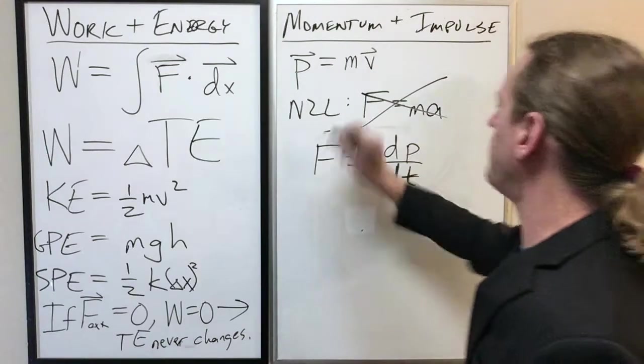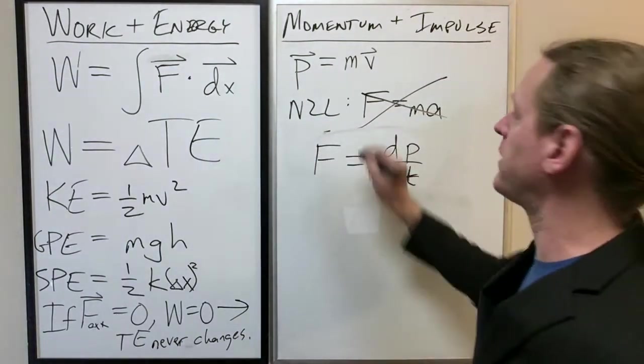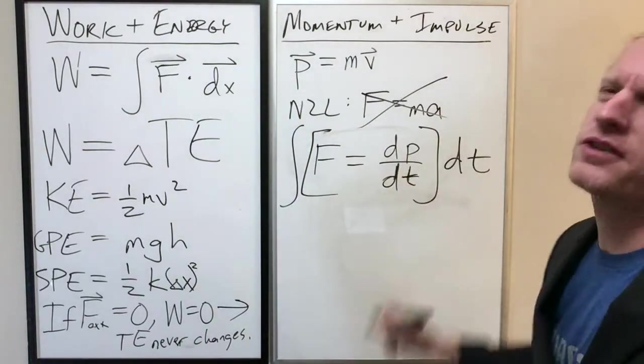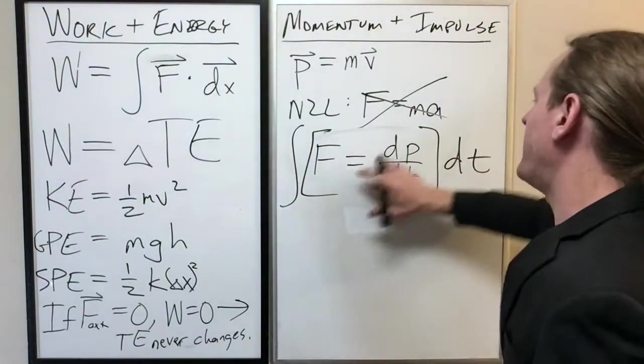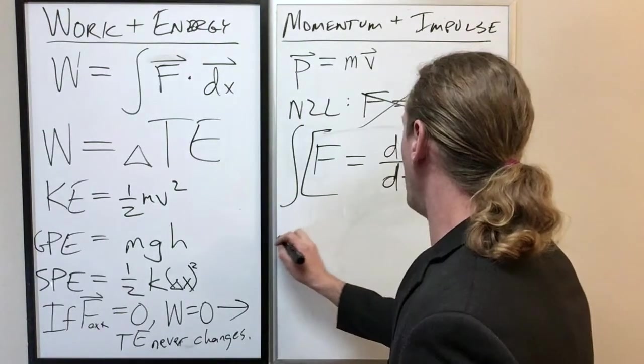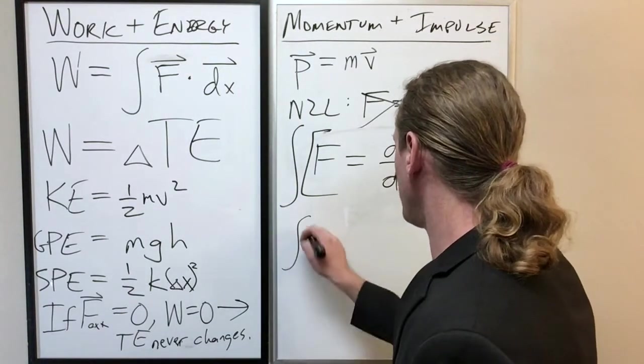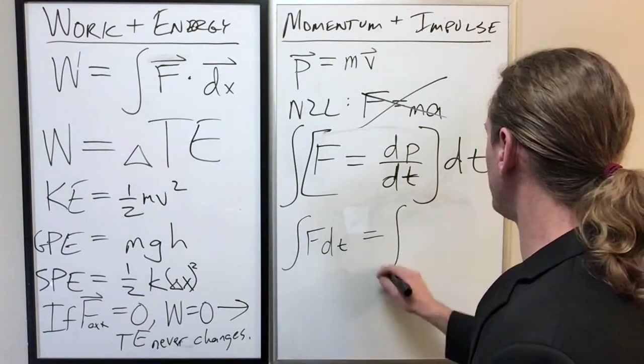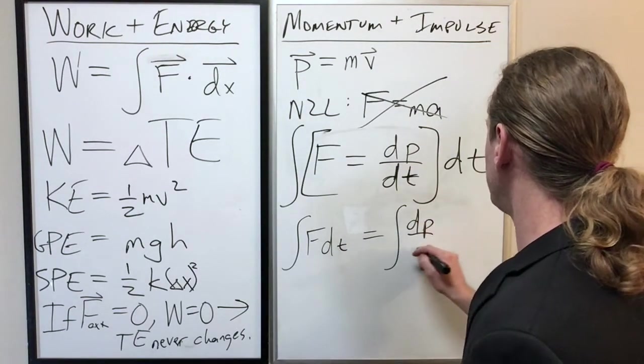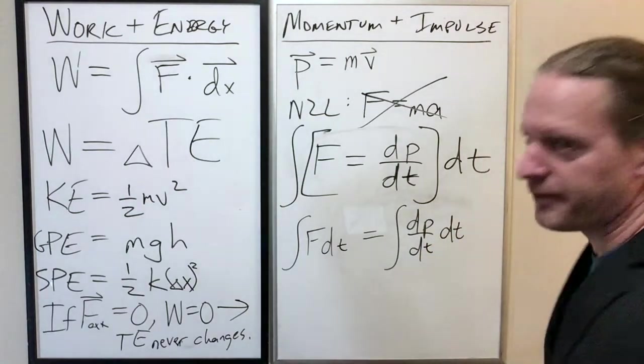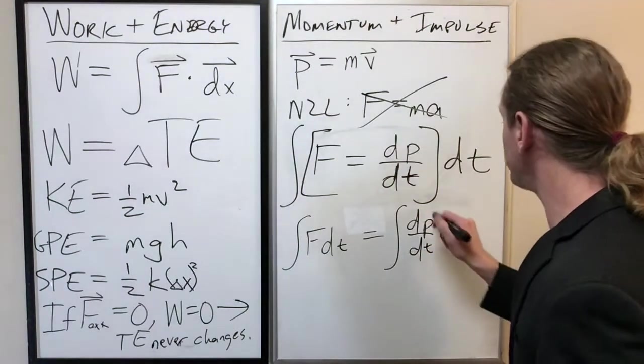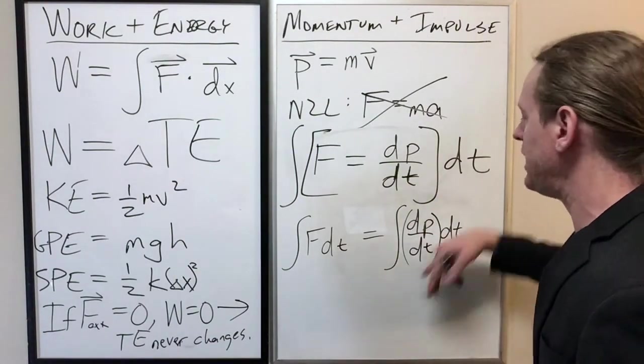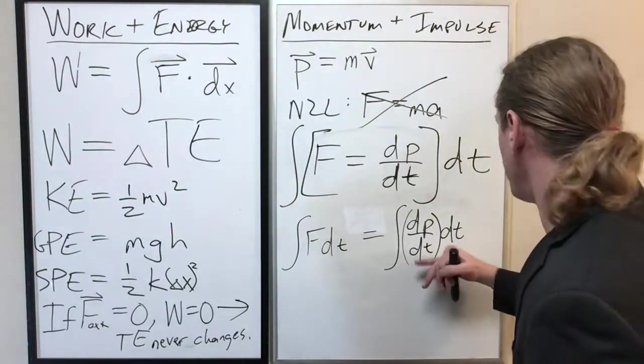If we now, let's see, integrate this. Actually first of all, if we integrate this whole thing with respect to time. So I'm going to do an integral of this, dt. This is messy notation, don't do this in homework sets, but I think you understand what this means here. Now this will become the integral of f dt.